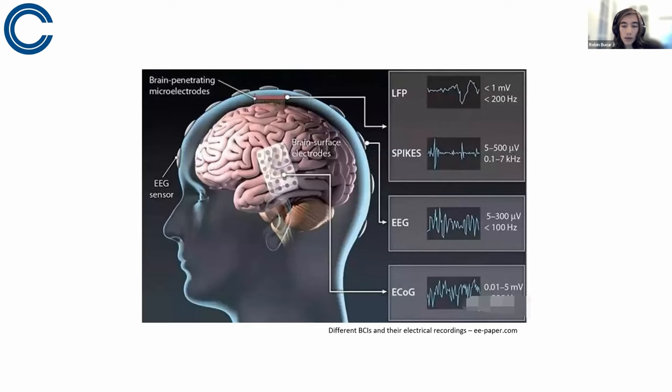Here are some different BCIs and how they differ in their recordings. So LFPs are, as you can see, more precise, where they can take the spikes and the tropes of brain recordings much more precisely in that areas, while EEG and ECoG have a lot more noise from the surrounding brain areas.